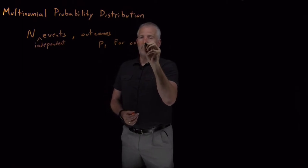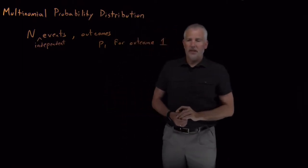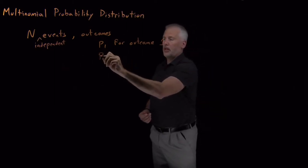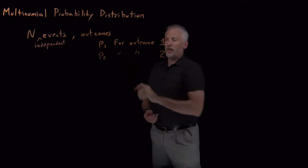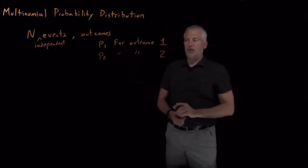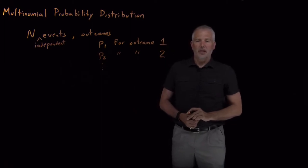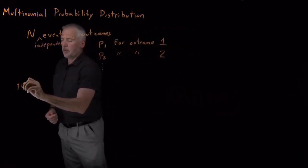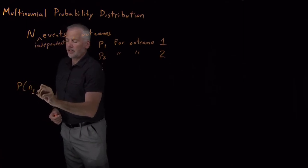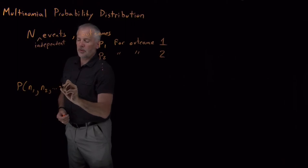And those outcomes happen with different probabilities. Outcome one, whatever that is, might happen with probability P1. Outcome two might happen with probability P2, and so on. We might have a very large number of these different outcomes. Then what we need to know is, we'd like to understand what's the probability that I get some number of outcomes of type 1, some number of type 2, and so on.